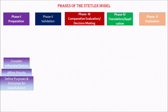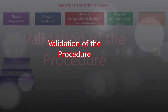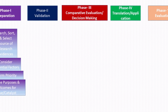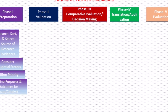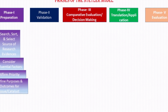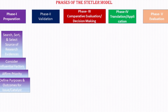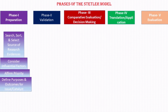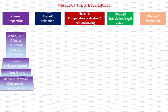After fixing priorities, consider the influential factors — those may be your profession, higher authority, and validation of the procedure. After that, you need to search for research evidences to determine whether the procedure you are going to apply on the patient has sufficient evidence or not. If enough evidence is available, then proceed to Phase 2 — Validation.